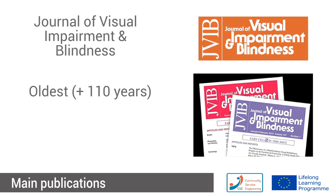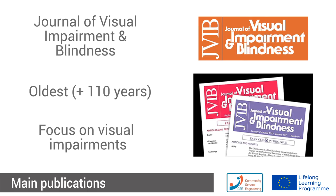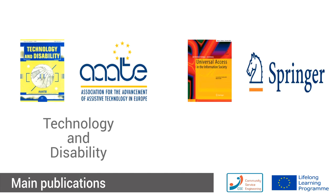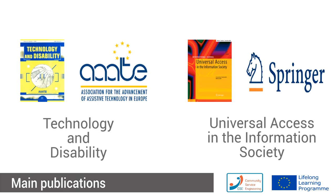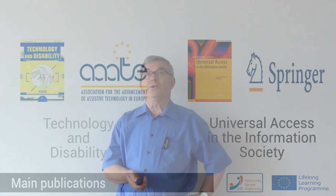There are not very many publications in the field of assistive technology. The oldest one is the Journal of Visual Impairment and Blindness, which has a narrow focus but is over 110 years old. The others are Technology and Disability, also supported by AAATE, and Universal Access to the Information Society, a publication by Springer. Those are the two most important publications in assistive technology.